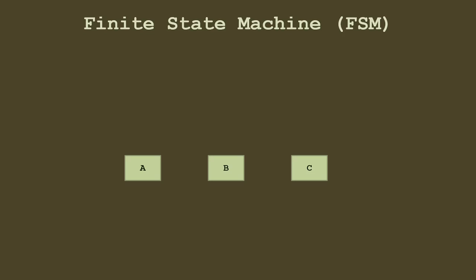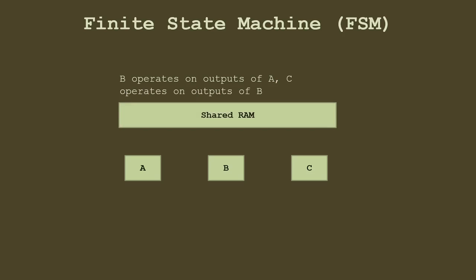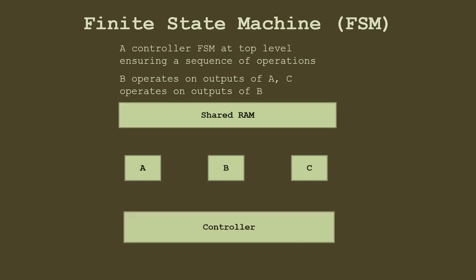Here is an example. Let's say we have three processing elements A, B, and C where B operates on the output of A, and C operates on the output of B. A outputs to a shared RAM, B performs something on that data, and C uses B's output. Normally finite state machines are used to control circuits, so we need a controller that can trigger B and C once A is done, and trigger C once B is done.